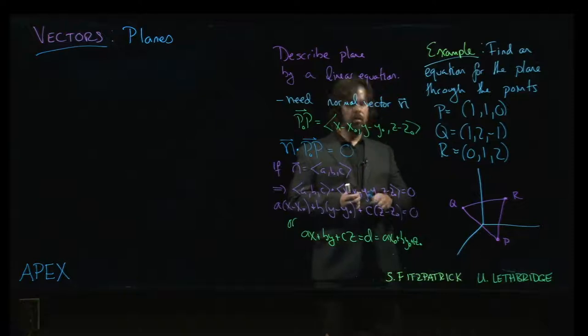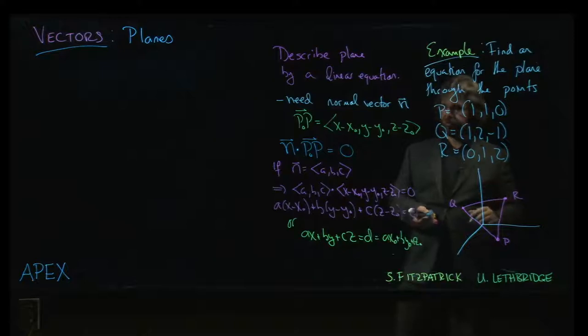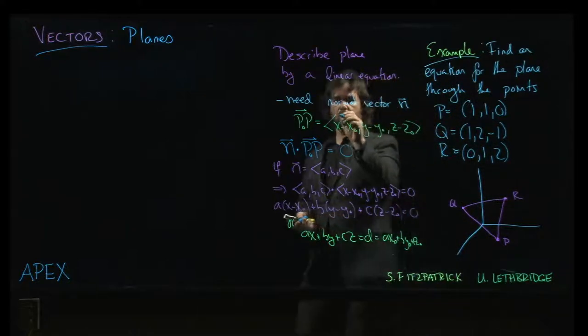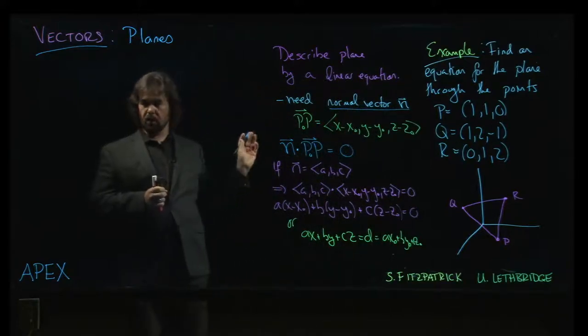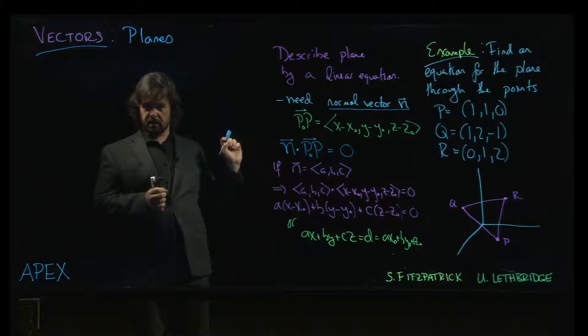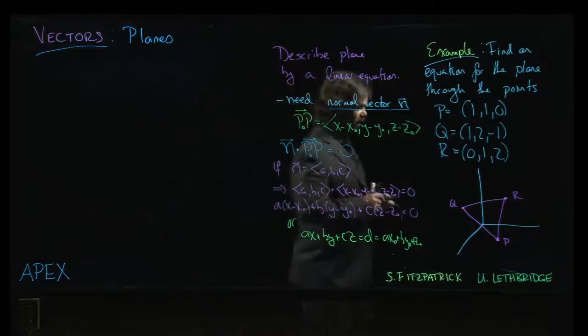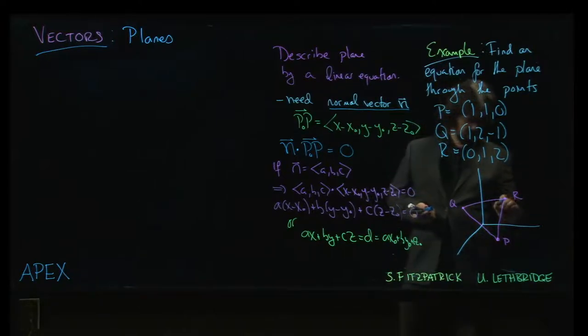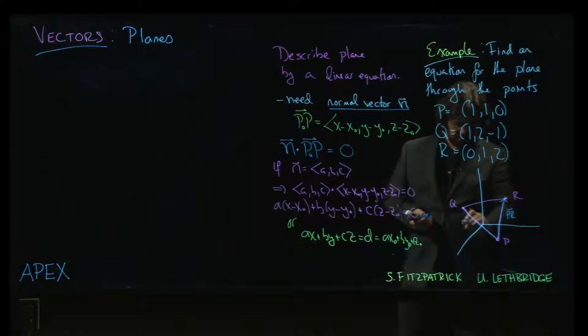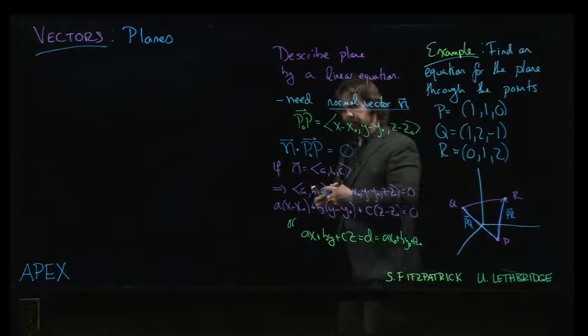So what you do in these situations is you look for two vectors, because what we want is this normal vector. Remember that the normal vector has to be orthogonal to every vector in the plane. So in particular, we have three potential vectors in the plane. We could take the vector from P to R, we could take this vector here from P to Q, and of course you could also take the vector from Q to R.